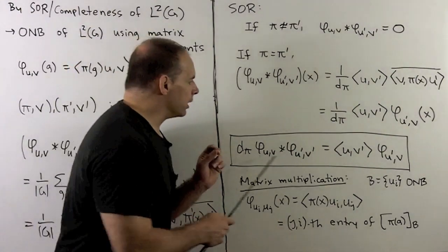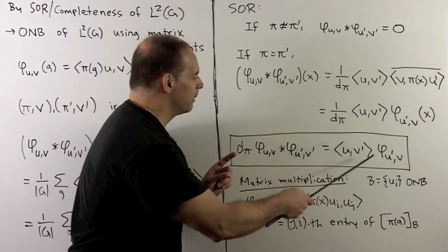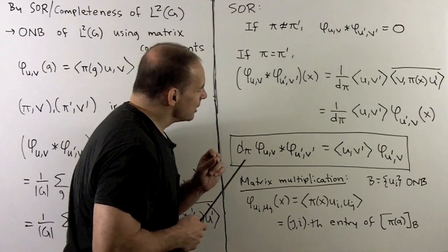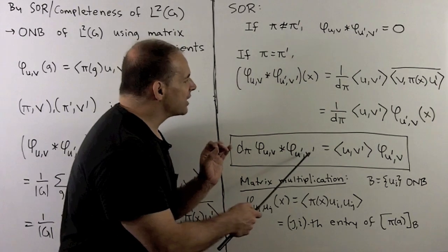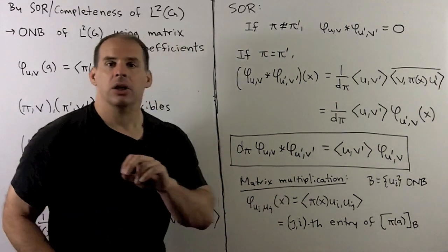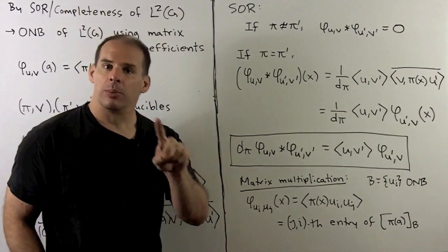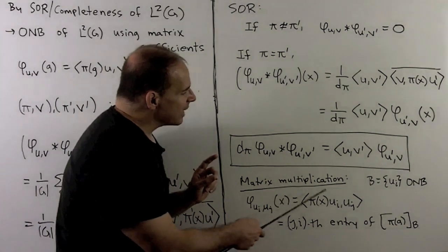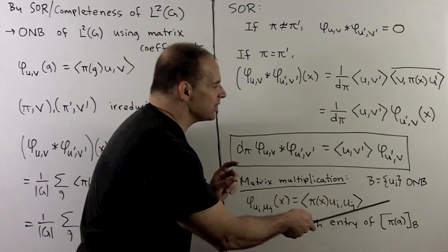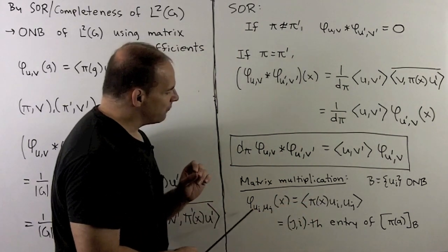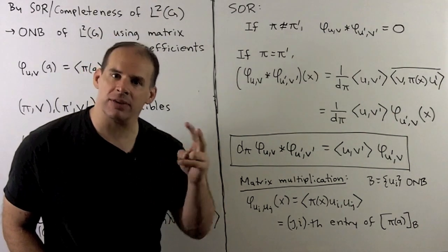We push the dimension d to the other side to get our formula. So if we take the convolution of two matrix coefficients scaled by the dimension, we get back another matrix coefficient scaled by the outer entries. Note this is very close to matrix multiplication — we are pairing the outside entries and the inside entries in opposite order. This would be matrix multiplication if we paired the inside entries correctly. Also, we are using pi(x) in the first coordinate; if we use an orthonormal basis u sub i and take the matrix coefficient for u_i, u_j, we are picking off the (j,i)-th entry of the associated matrix for pi(g), so everything is in the other order.